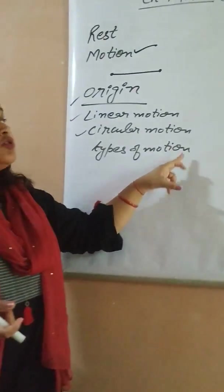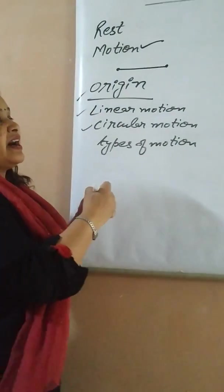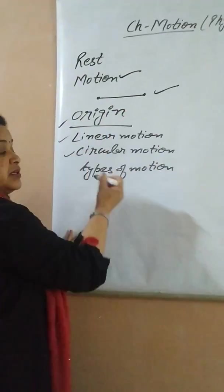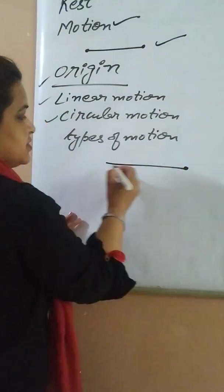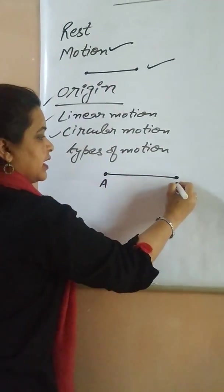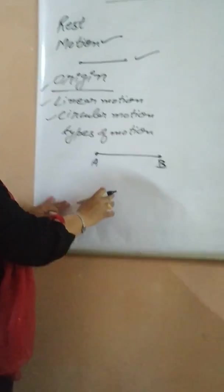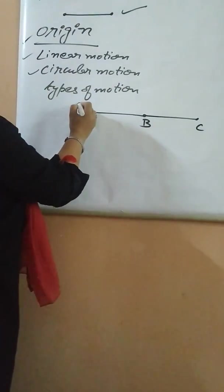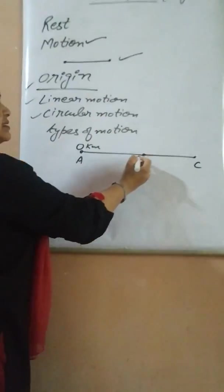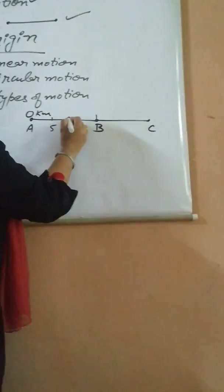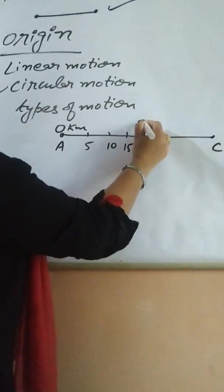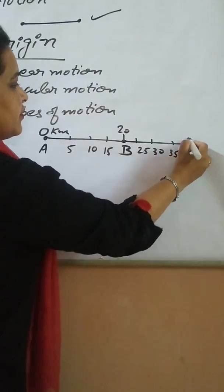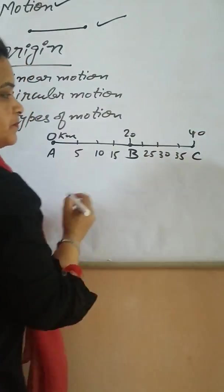Now, to describe motion, I have drawn a line here. I need two points — I label this point A, this point B, and further there is point C. I am marking zero kilometers here, then 5, 10, 15, 20, 25, 30, 35, and this is at 40 kilometers.